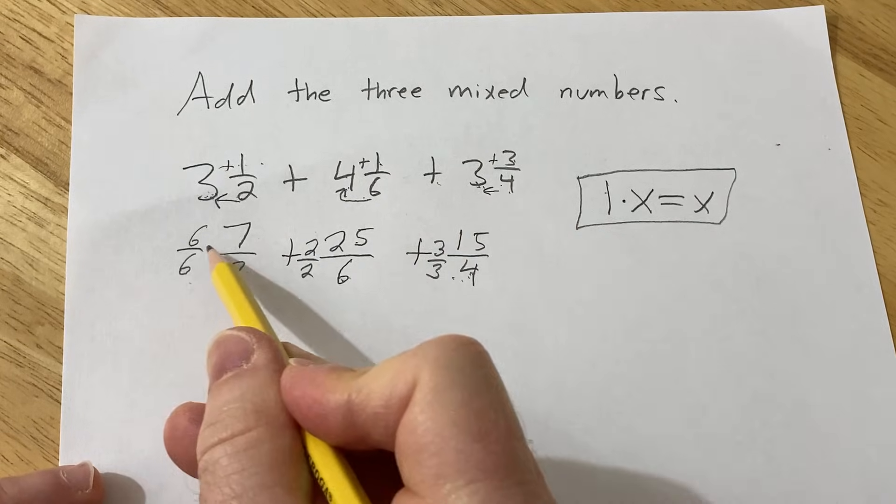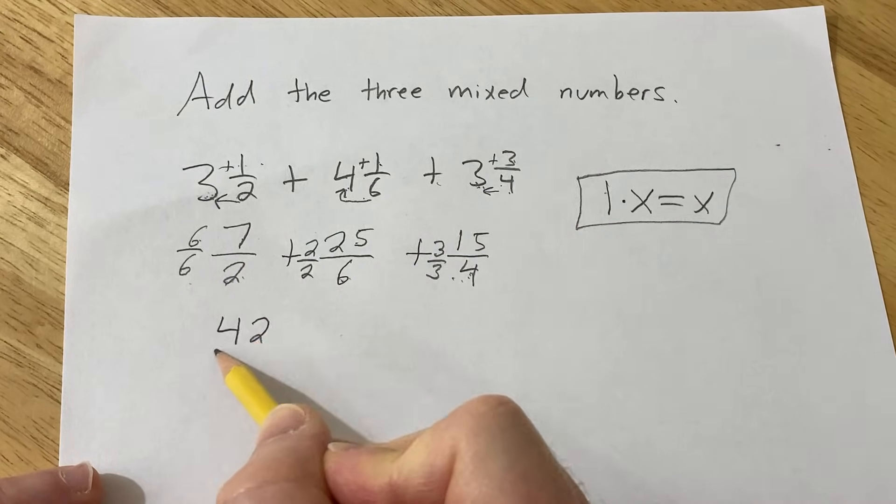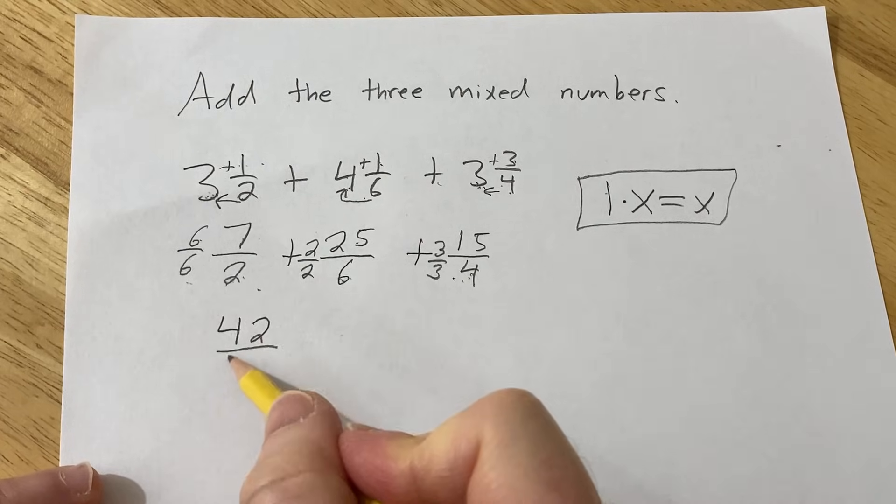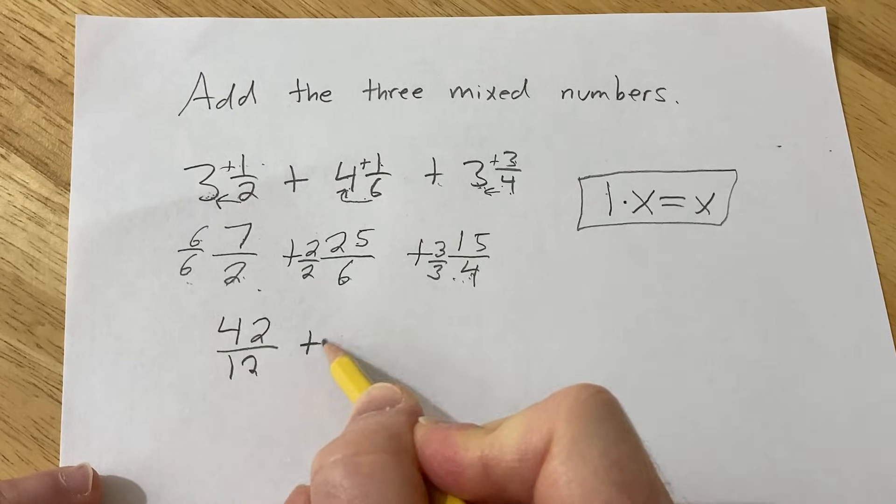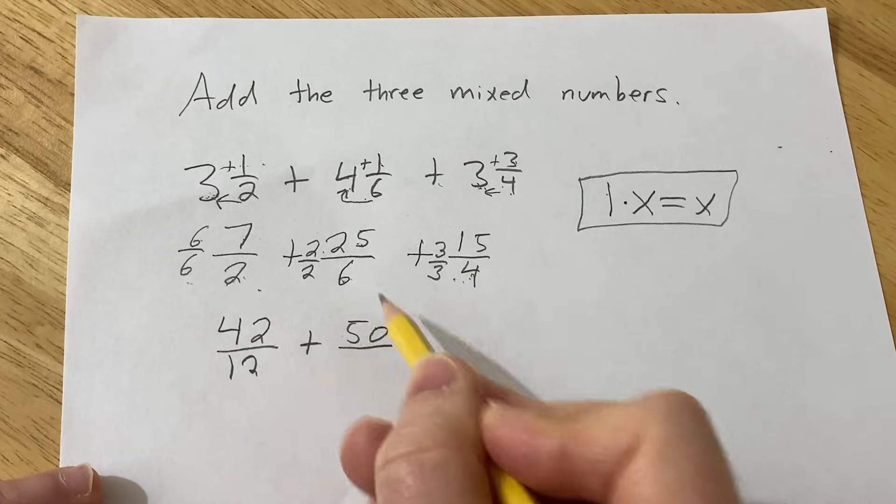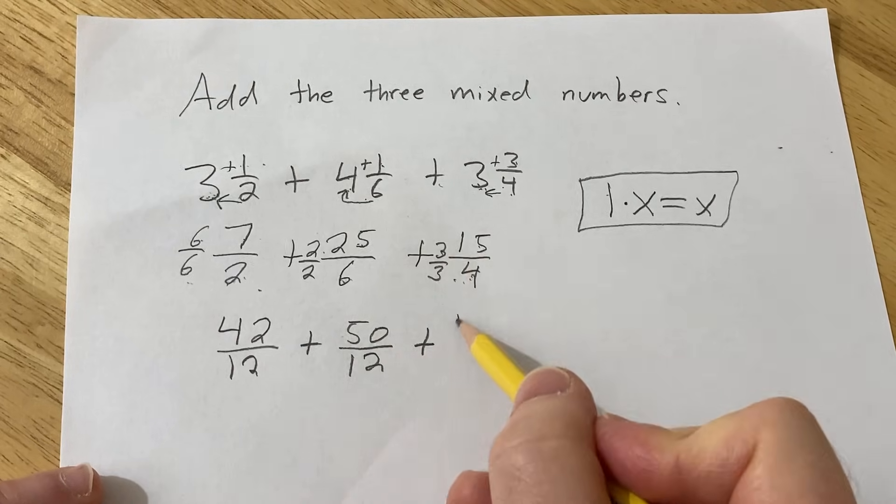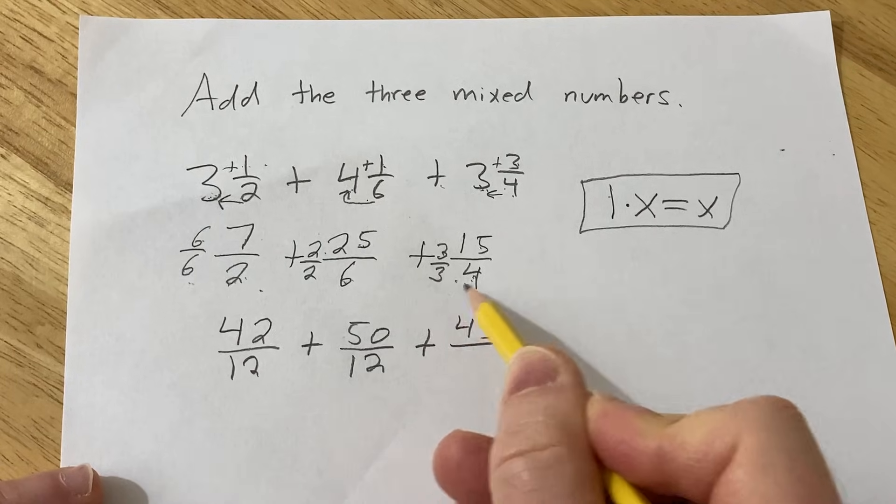So now we multiply across. 6 times 7 is 42. The numbers are going to get really big. 6 times 2 is 12. Plus, 2 times 25 is 50. 2 times 6 is 12. Plus, 3 times 15 is 45. 3 times 4 is 12.